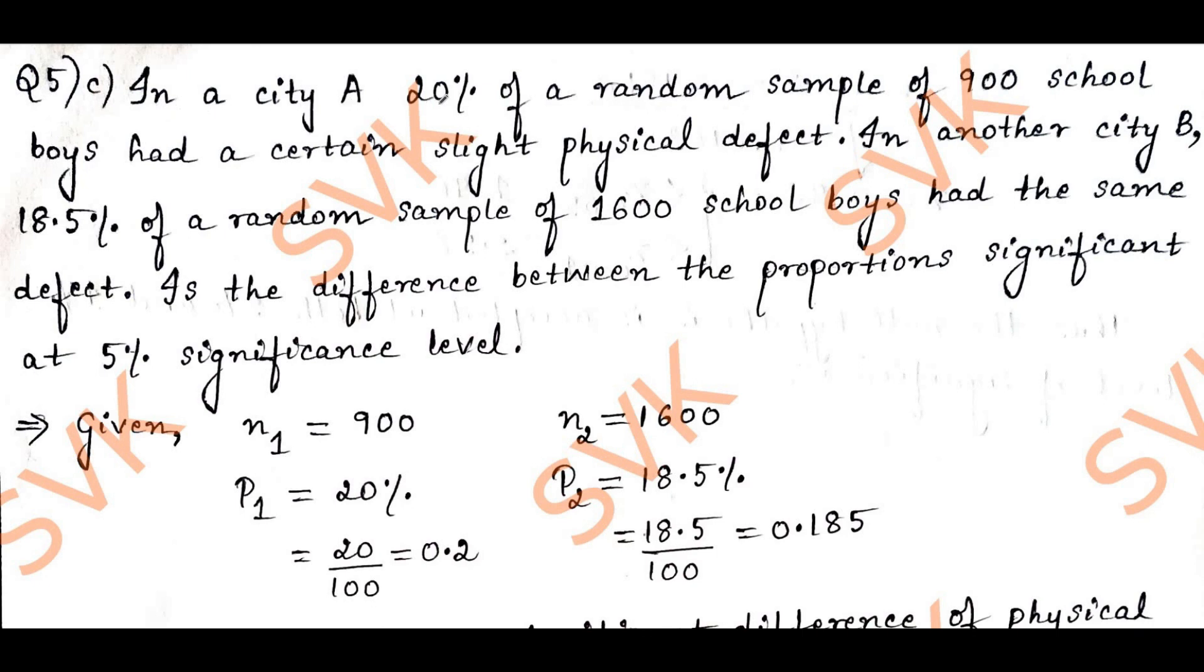In a city A, 20% of a random sample of 900 school boys had a certain slight physical defect. In another city B, 18.5% of a random sample of 1600 school boys had the same defect.